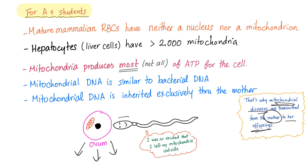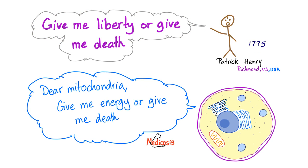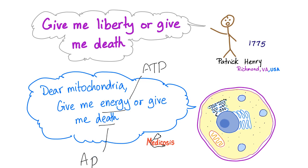In 1775, in Richmond, Virginia, Patrick Henry shouted 'Give me liberty or give me death.' But each day the cell shouts to the mitochondria: 'Give me energy or give me death.' Give me energy — by which we mean ATP. Give me death — by which we mean initiating apoptosis.